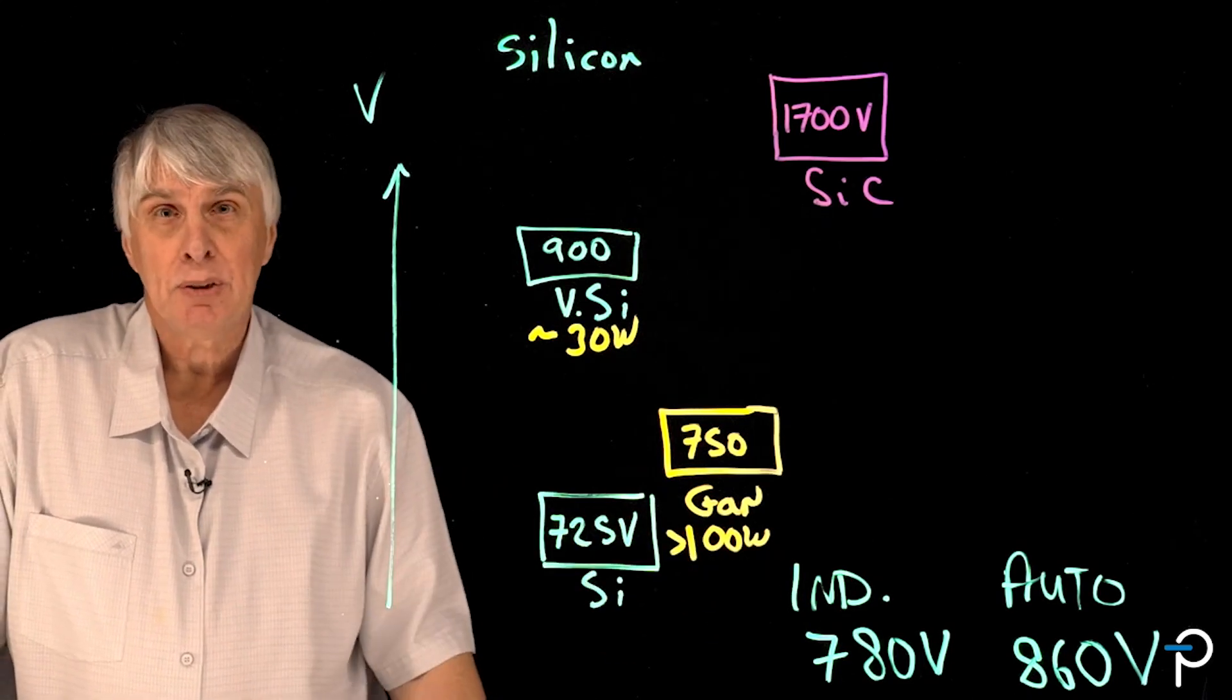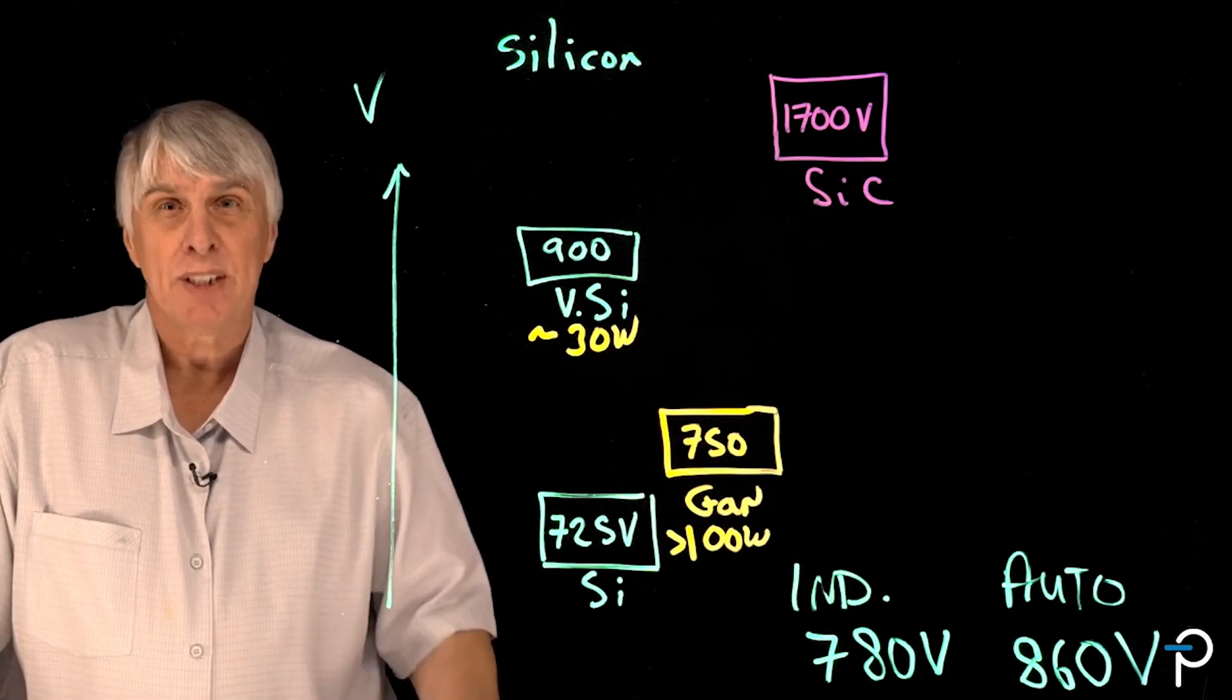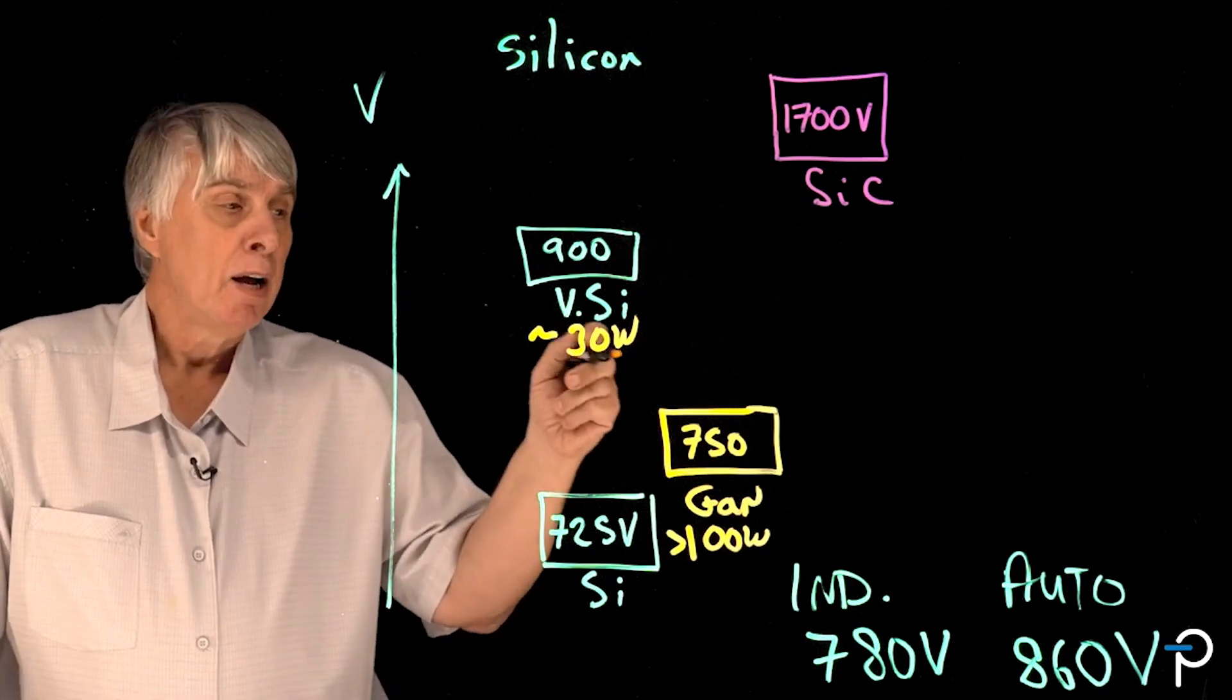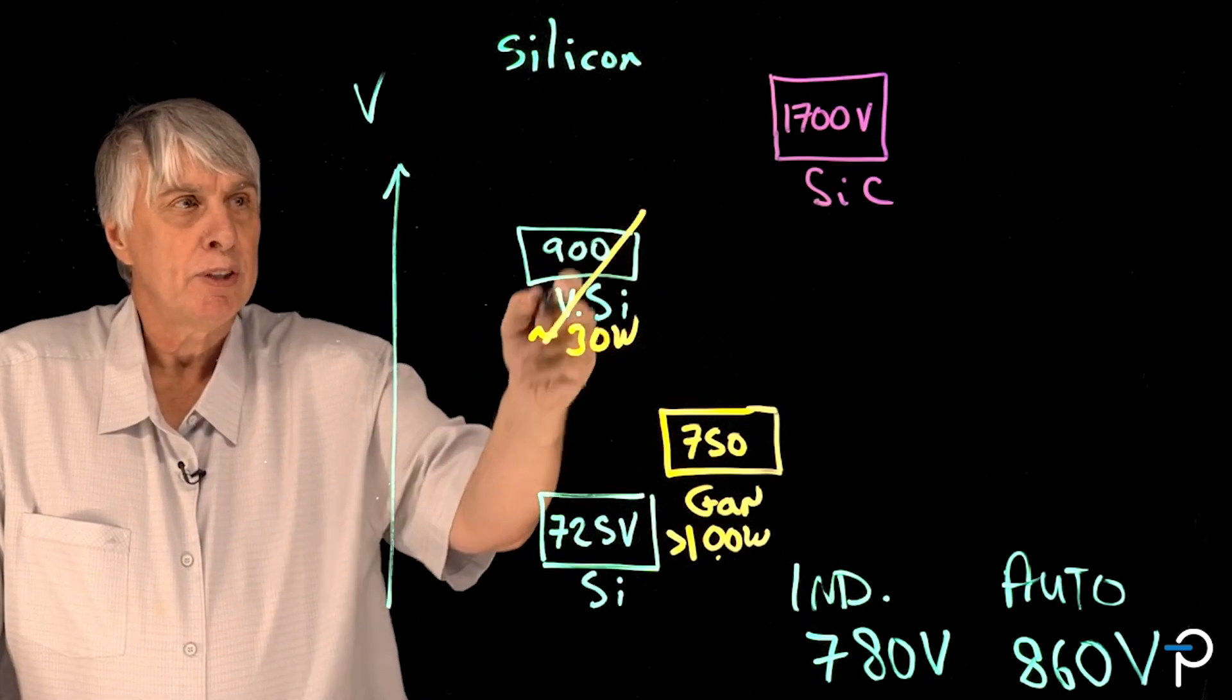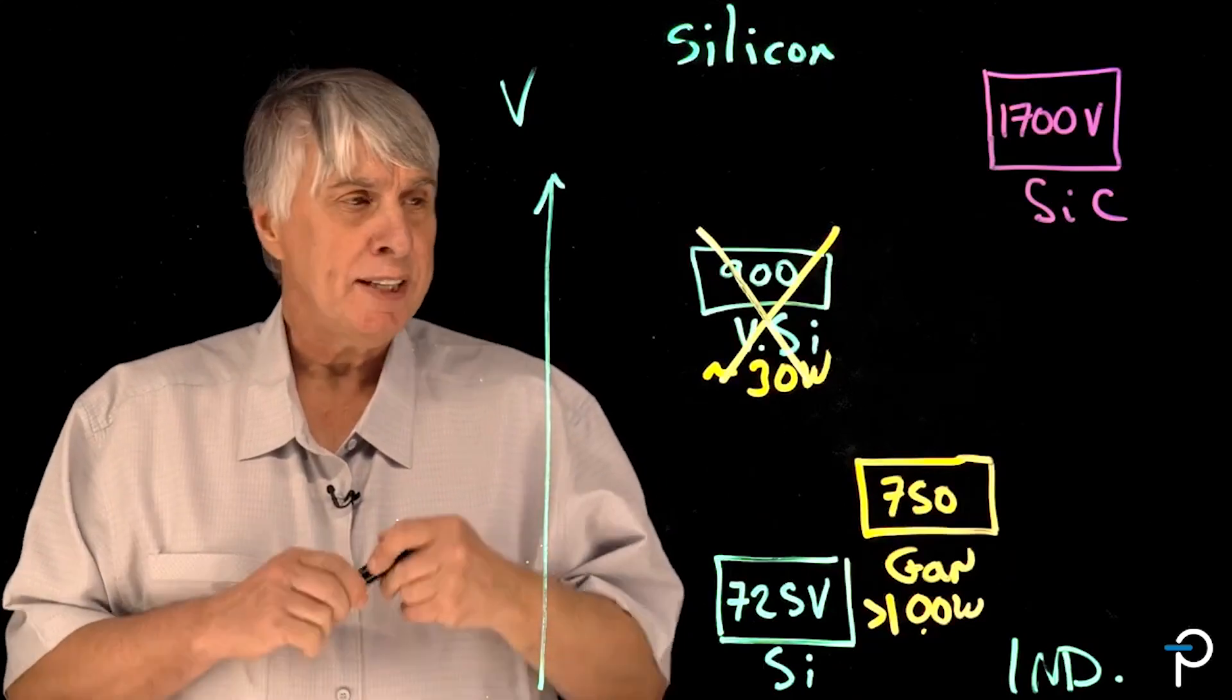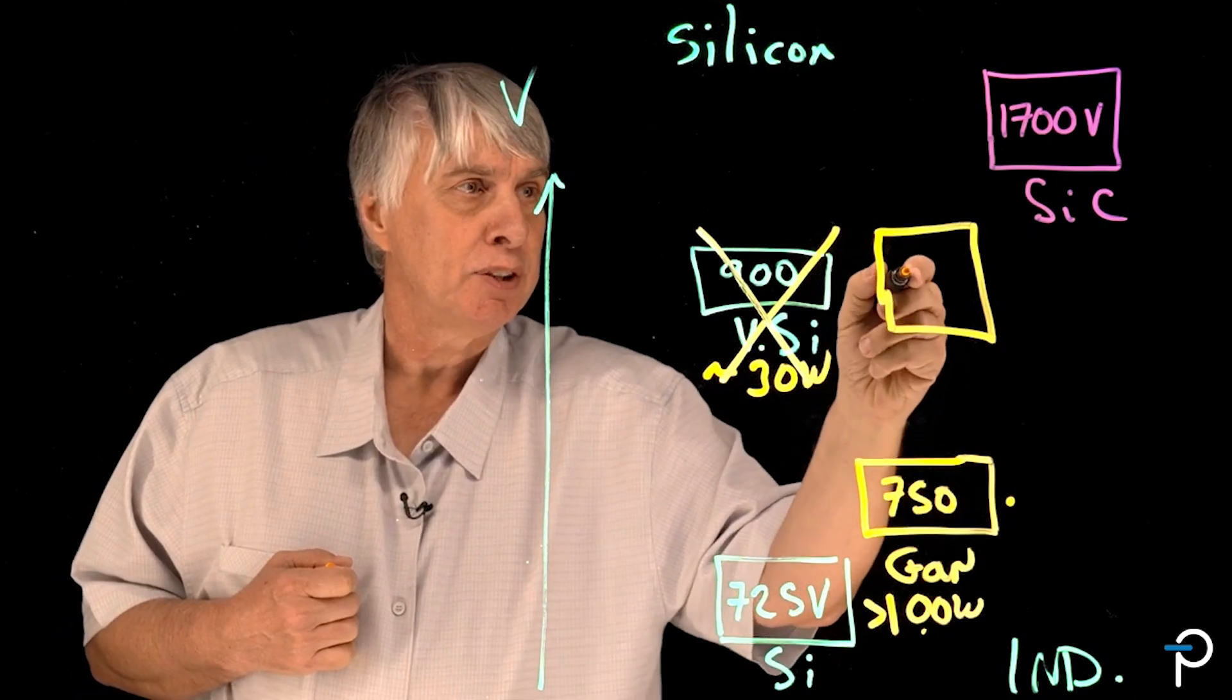Automotive systems are requiring more auxiliary power as the importance of the 12 volt auxiliary rail scales up. Industrial applications and consumer applications, commercial applications, all of these things are requiring more auxiliary power with every iteration of the products they're servicing. This means that 100 watts is much preferable to 30 watts but we can't get more than about 30 watts into our 900 volt device. So what we've done is taken the capabilities of our 750 volt GaN and introduced a 900 volt version of that technology.